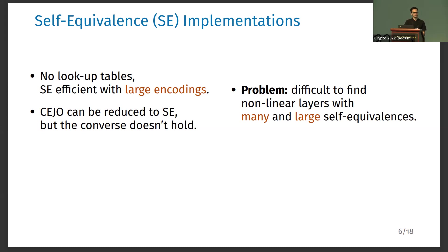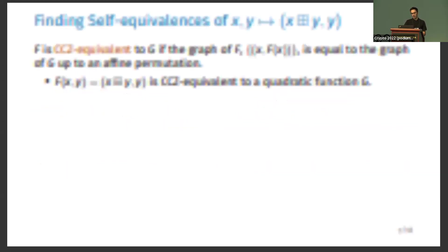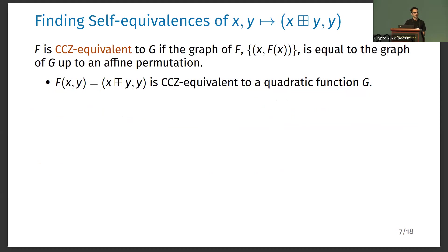The main problem of using self-equivalence implementations is that one needs a non-linear layer with many and large self-equivalences, which is very difficult to find. So in this work we started by finding such a non-linear layer. We decided to work with the permute modular addition, which is simply the modular addition turned into a permutation by giving to the output one of the inputs.